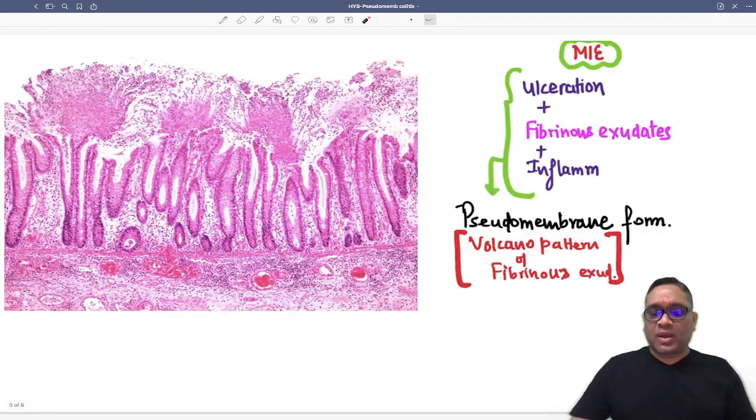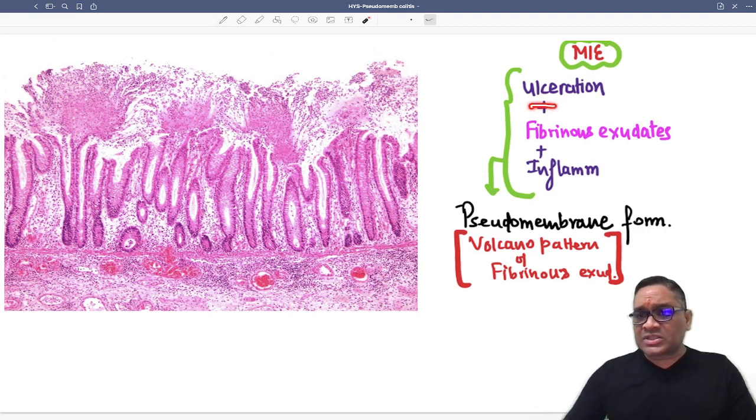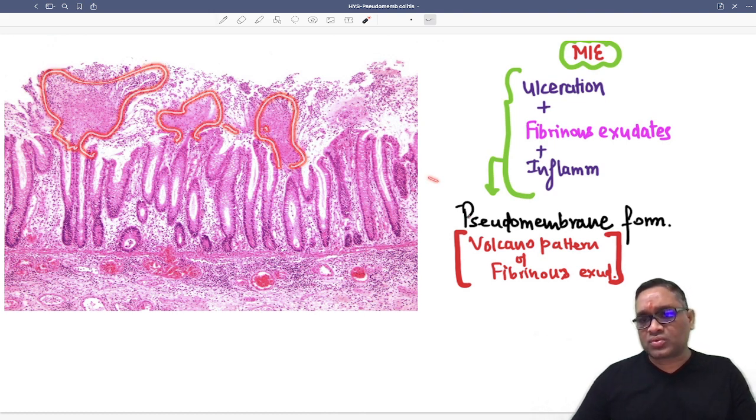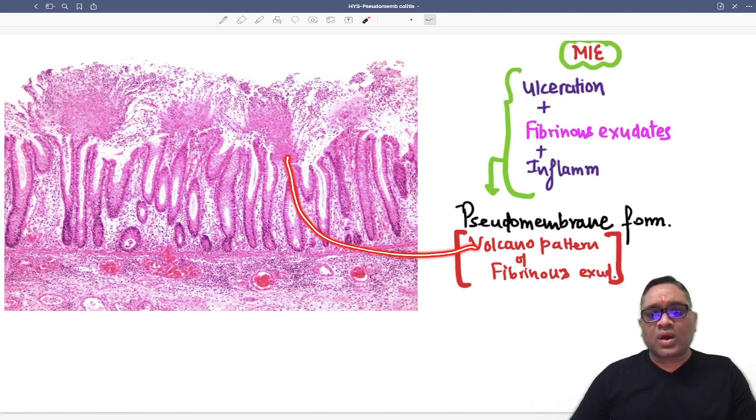Take the biopsy from here or take the specimen out, and you will find there are ulceration and fibrinous exudate along with inflammation. So you can see this is the area. You can notice there is a fibrinous exudate which is coming like a volcano-like eruption. Can you see this is looking like a volcano-like eruption? So we will be describing this as a volcano pattern of fibrinous exudate.